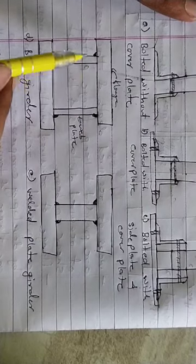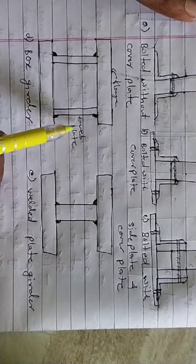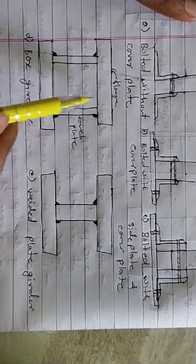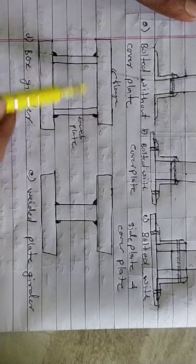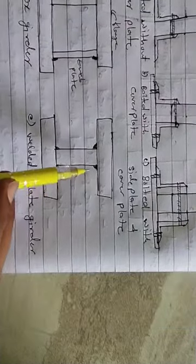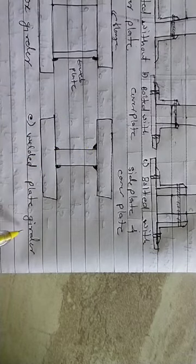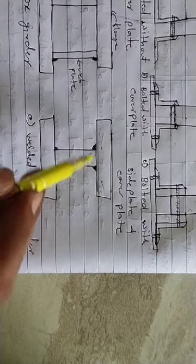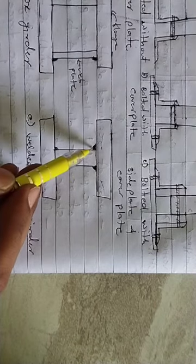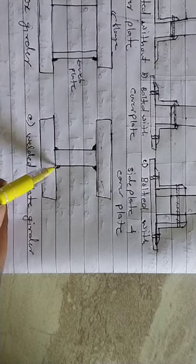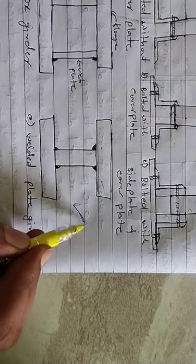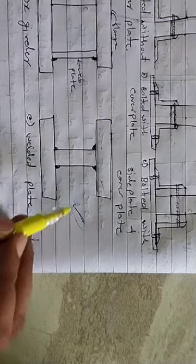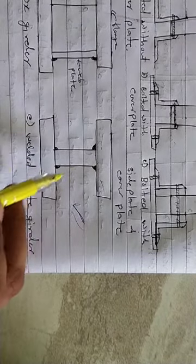The fourth type is a box girder, in which web plates and two flanges are provided and connected by welding. The fifth type is a welded plate girder, where the top flange, bottom flange, and web plate are all connected by welding. We are going to discuss how to design this welded plate girder.